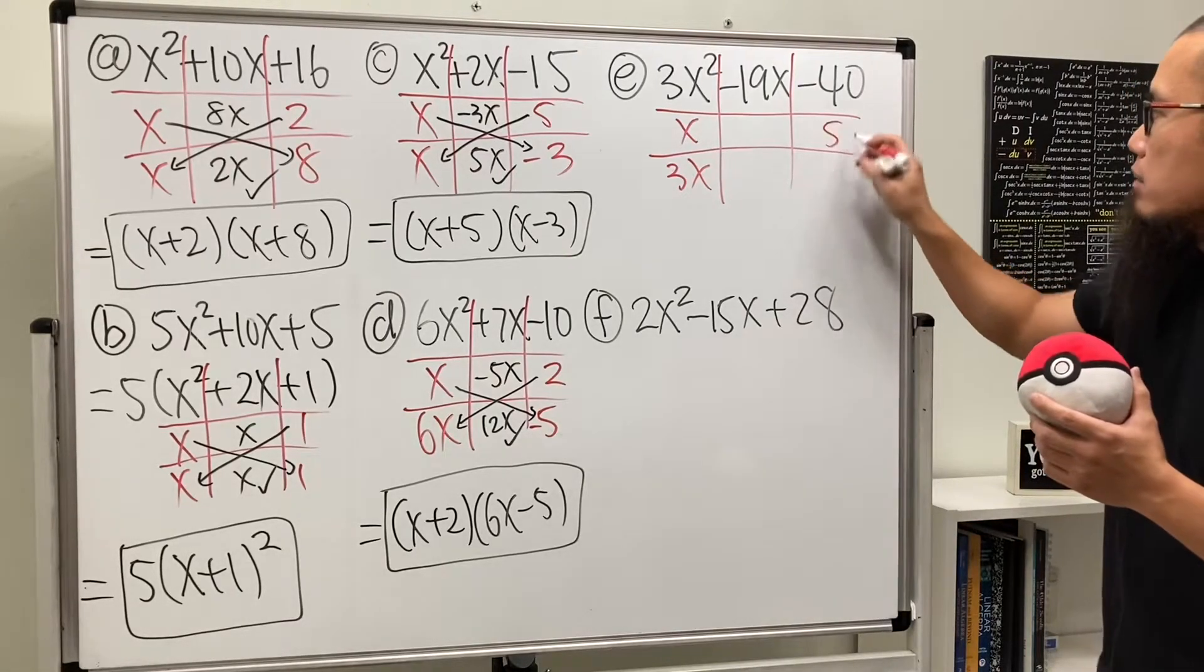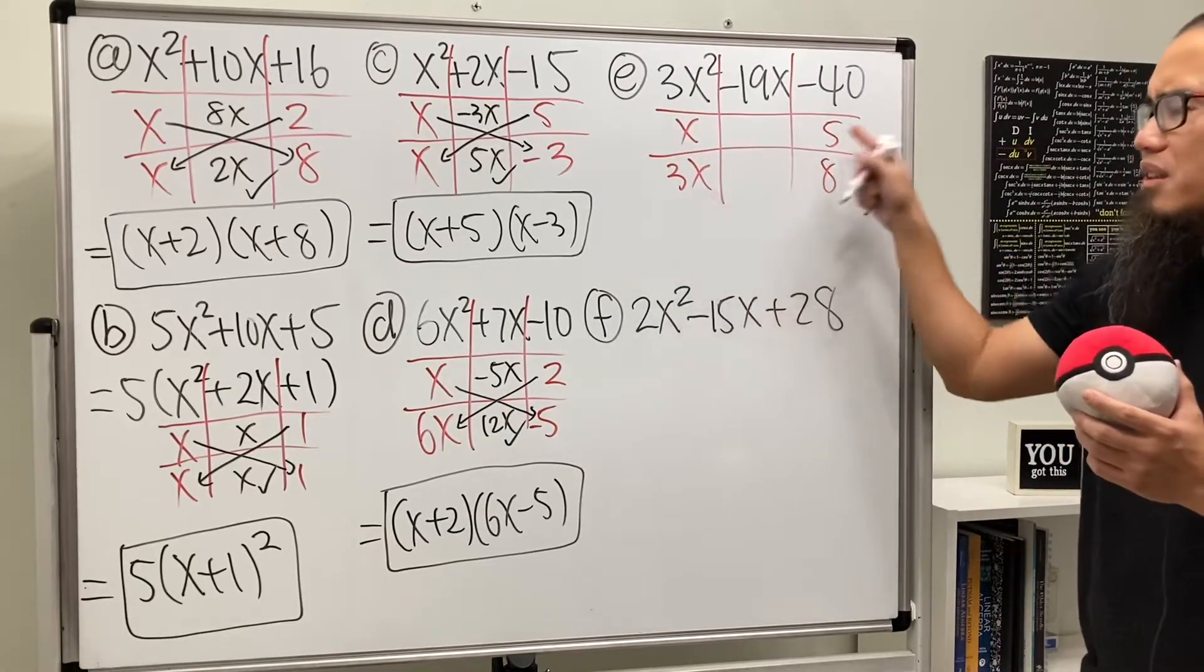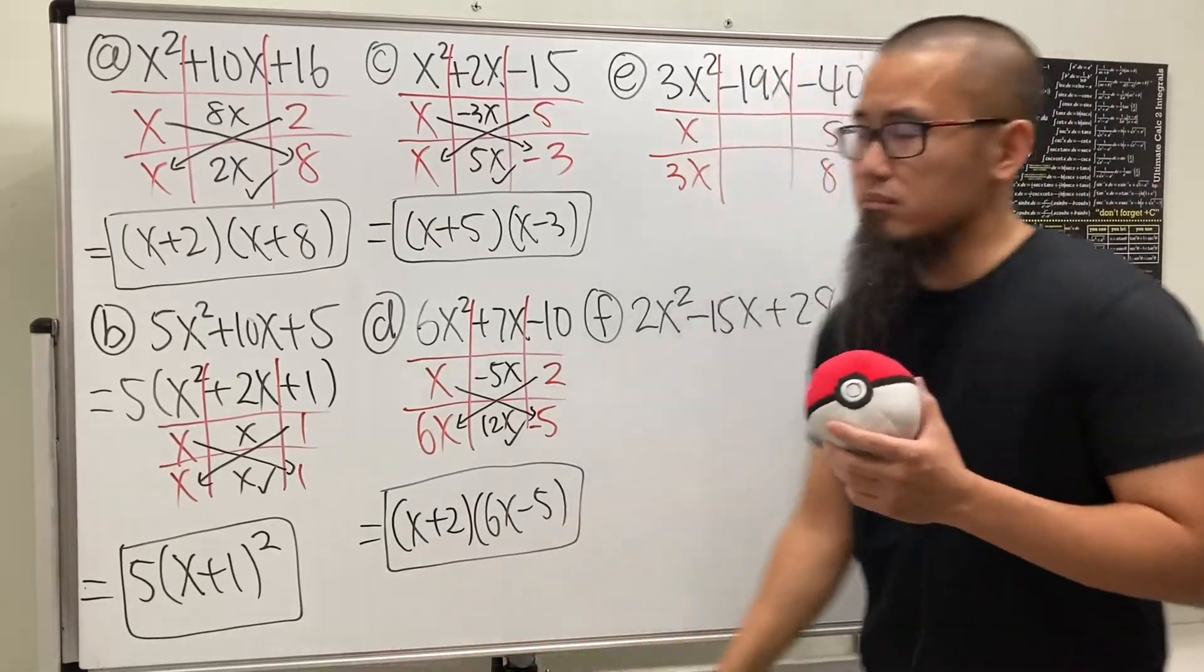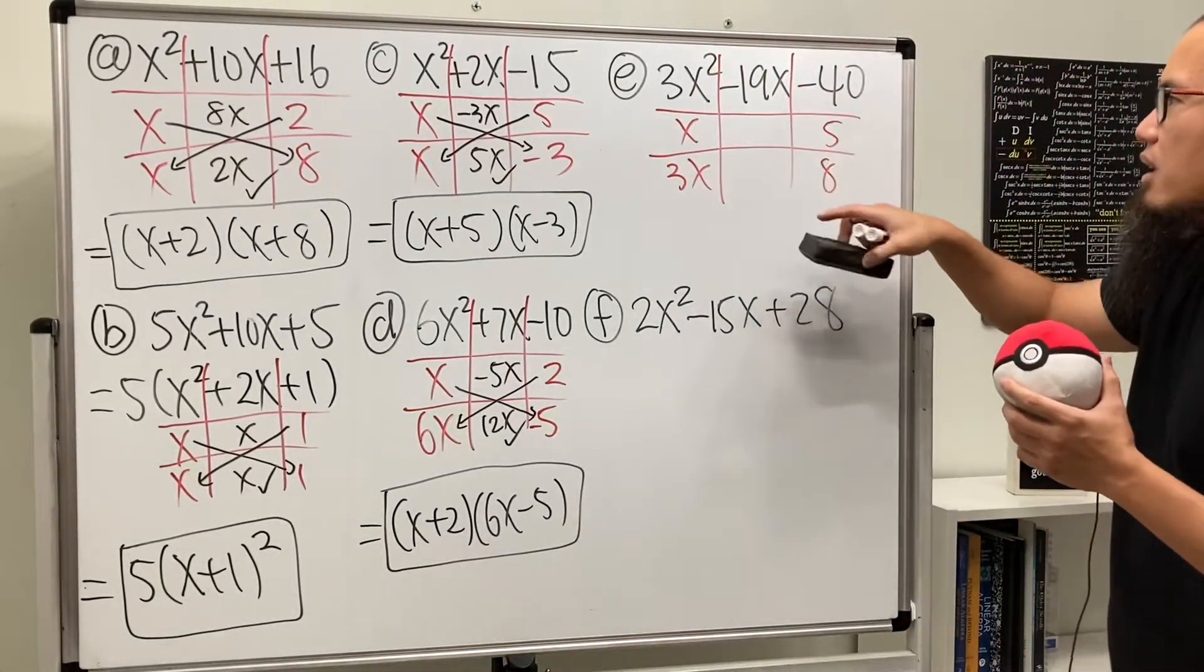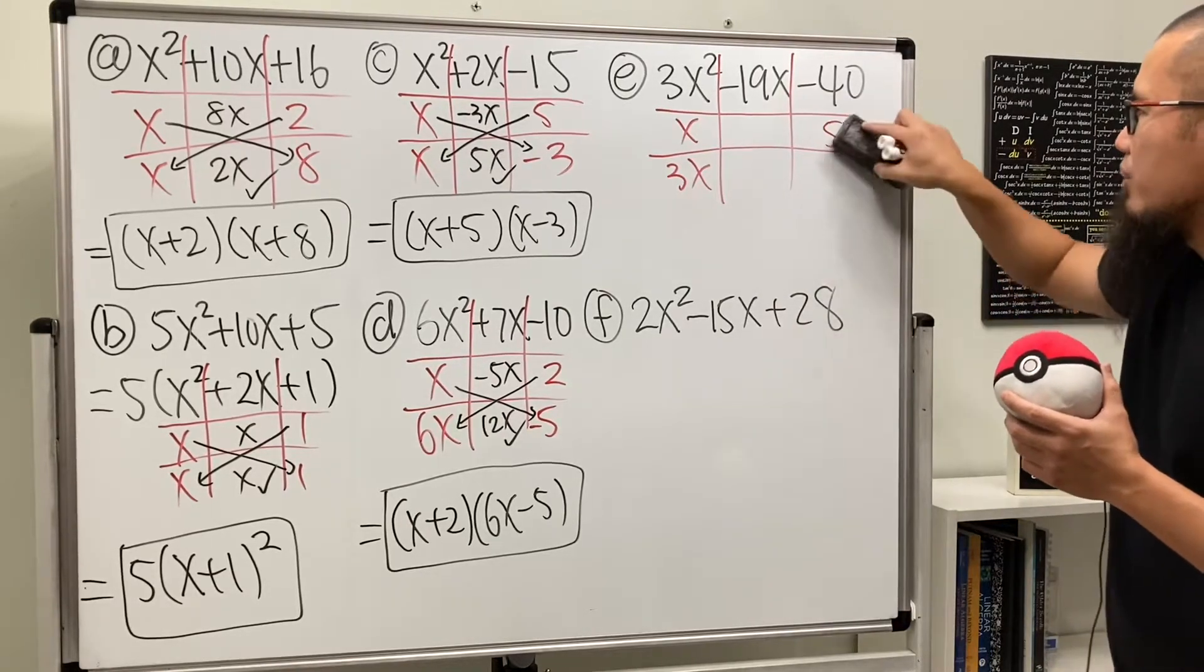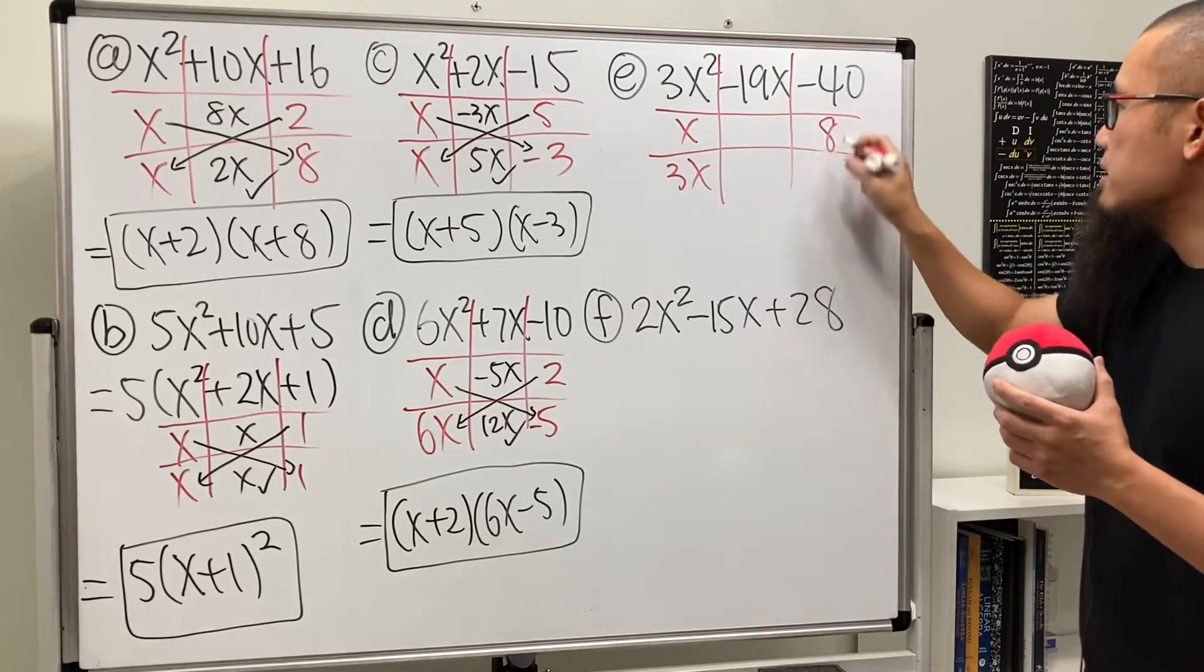So let's go ahead and put that down. If we do that, that will give us 8x, and this is going to give me 15x. I don't think that's going to work out. There's no way for us to get a negative 19x regardless which one I make negative. So no.